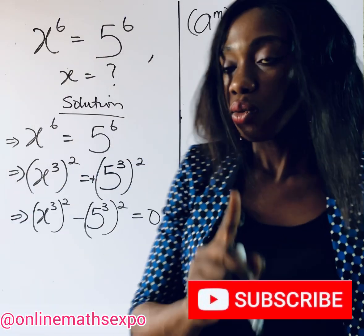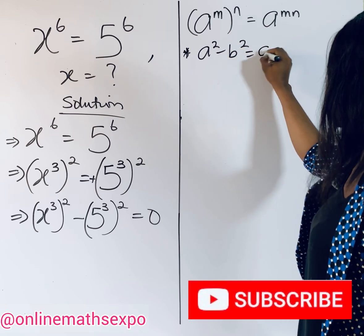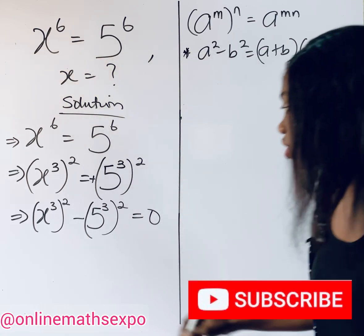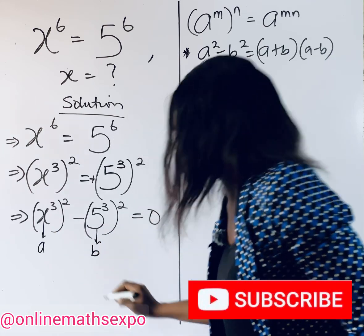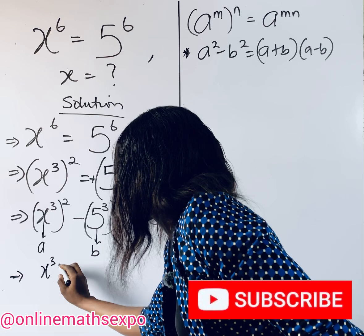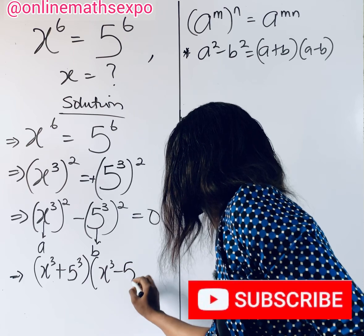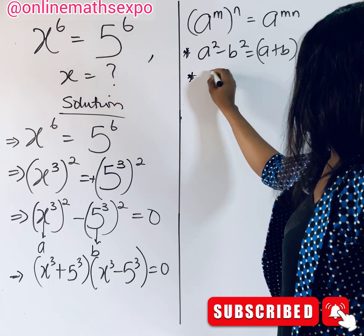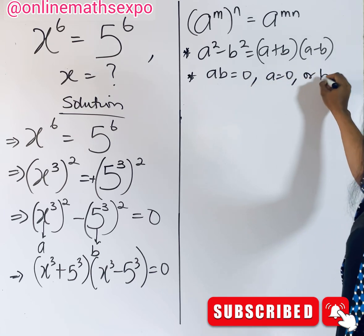Now remember the rule of difference of two squares, which says a squared minus b squared equals (a + b)(a − b). This formula will guide us here. Observe that x cubed takes the value of a, and 5 cubed takes the value of b. So if we apply this formula, we get (x cubed + 5 cubed)(x cubed − 5 cubed) equals 0. Now remember that if a·b = 0, then either a = 0 or b = 0.